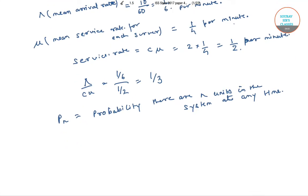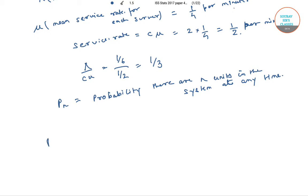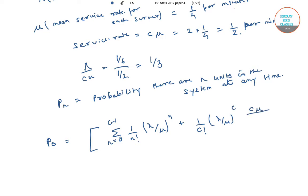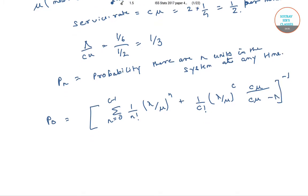P_n is defined as the probability that there are n units in the system at any time, that is the probability of having n customers in the system. Now P_0 equals the inverse of: summation from n equals 0 to C minus 1 of (1 by n factorial into lambda by mu raised to the power n), plus (1 by C factorial into lambda by mu raised to the power C into C mu divided by C mu minus lambda). Here our C is equals to 2.